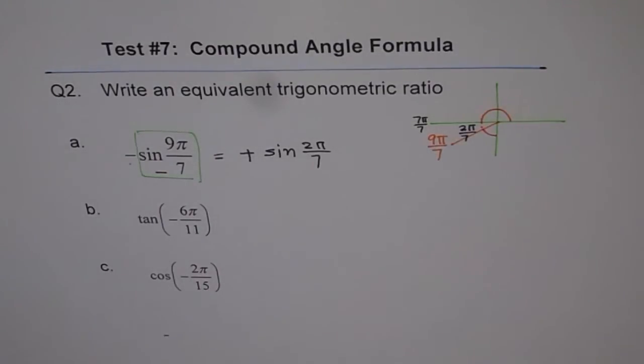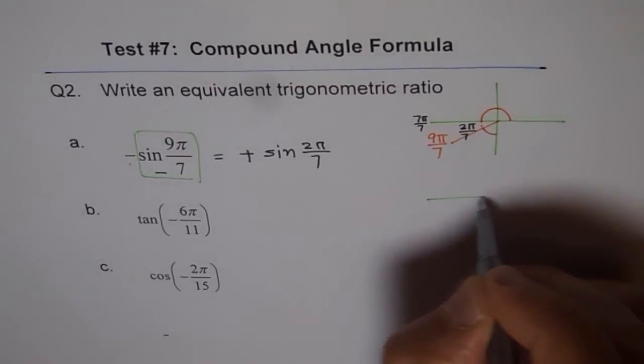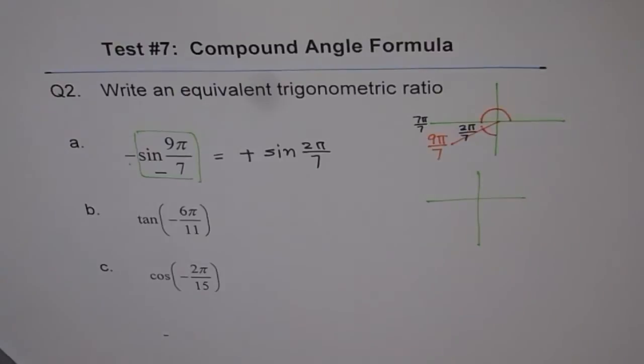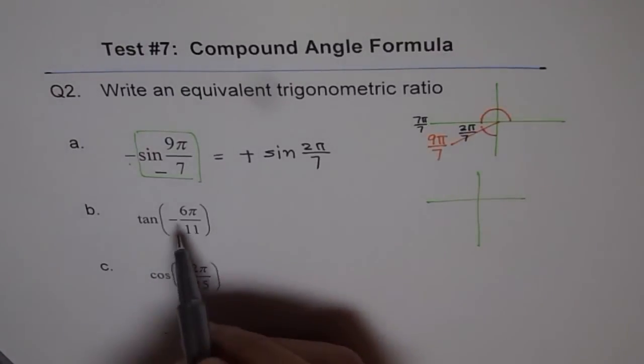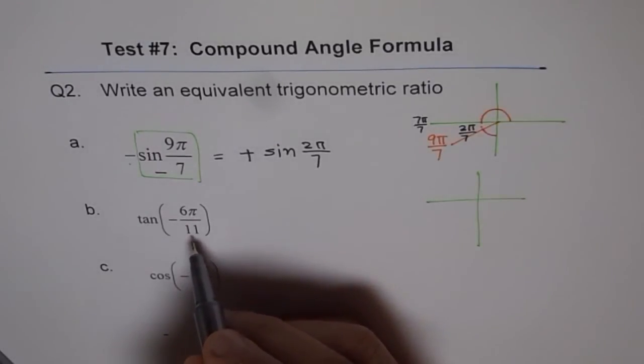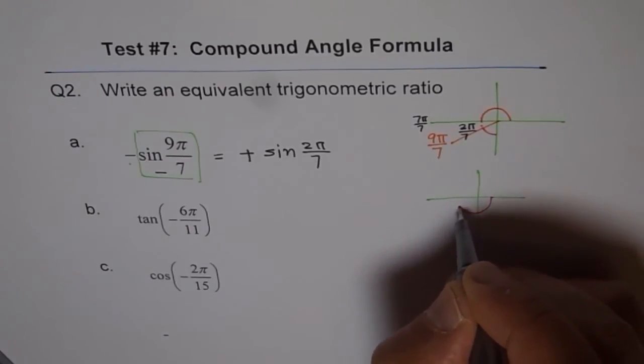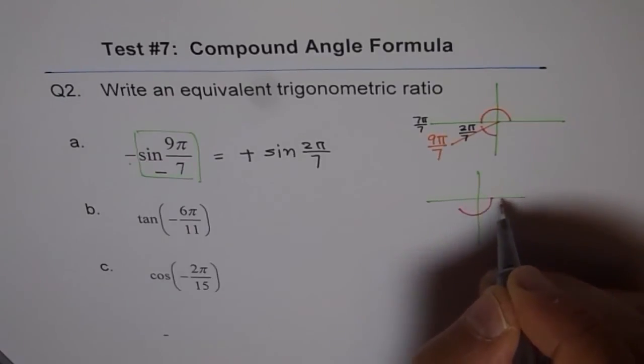Now let's look into the next one, tan minus 6π by 11. When we say tan, let's do a coordinate for this. So what we are trying to see here is minus. That means we'll move counterclockwise. 6π by 11. There are 11 in all and we went 6. So we left 5.